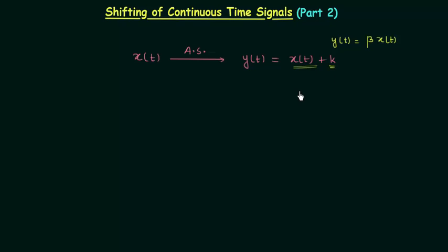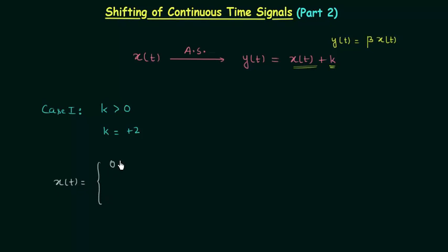Depending on the value of k we have two cases. In case number 1, k is greater than 0, or k is positive. Let's say k is equal to plus 2. The original signal xt is defined as: it is equal to 0 when t is less than 0; it is equal to 2 when 0 is less than or equal to t and t is less than or equal to 2; and it is 0 again when t is greater than 2.